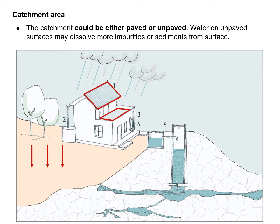Roof catchments have the maximum runoff and are generally considered best. In India, roofs in urban areas are mostly made of RCC, GI sheets, tiles, and slates, while some roofs are thatched. Keep in mind that concrete or cement roofs retain more dust and dirt than metal roofs.